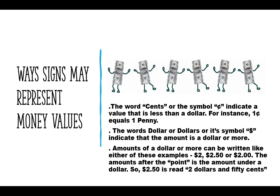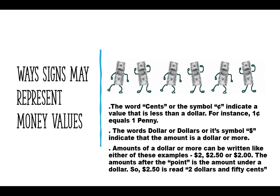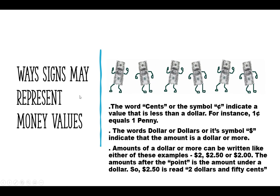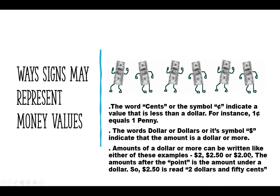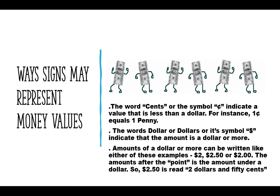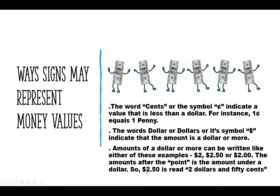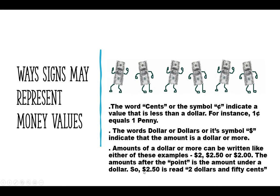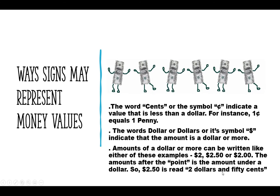Two dollars and fifty cents is how we would read $2.50. Another way to write just two dollars could be $2.00, but either way you would just say 'two dollars.' You'll often see it written without the extra two zeros because they're essentially pointless. The amounts after the decimal point represent the amount under a dollar, so $2.50 is read as two dollars and fifty cents.